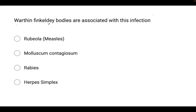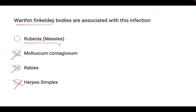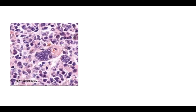Warthin-Finkeldey bodies are associated with measles. Herpes is associated with Cowdry bodies. Rabies is Negri bodies. Molluscum contagiosum is associated with Guarnieri bodies. This is seen in measles.